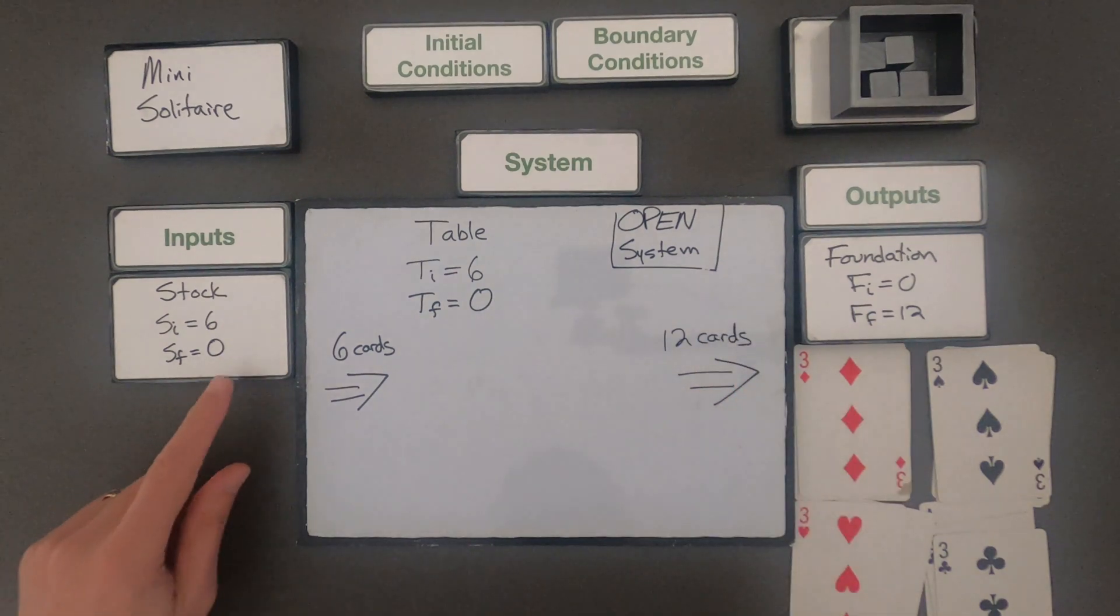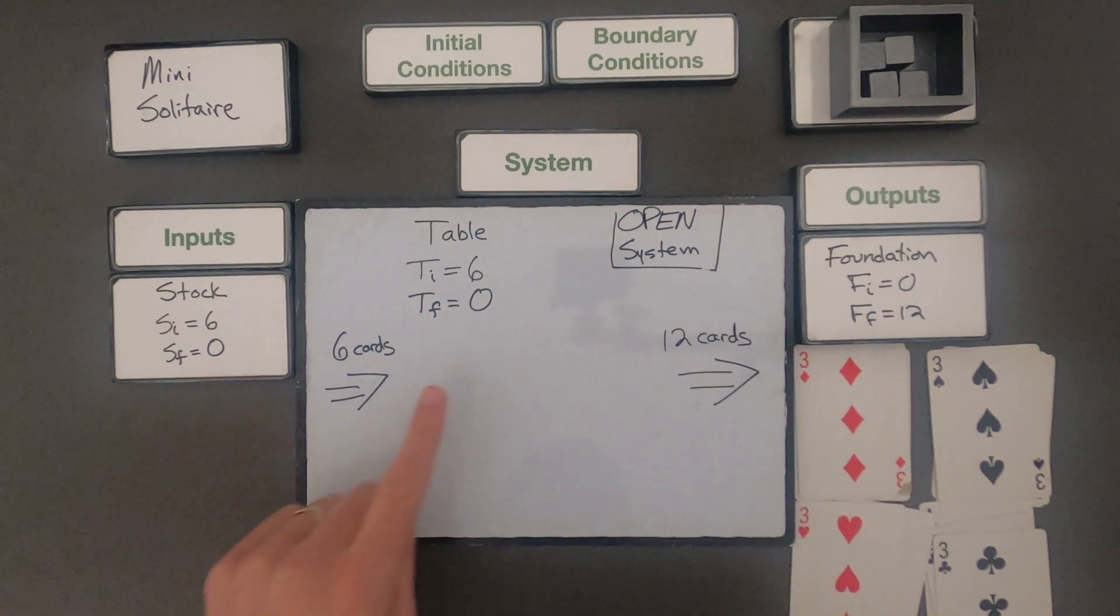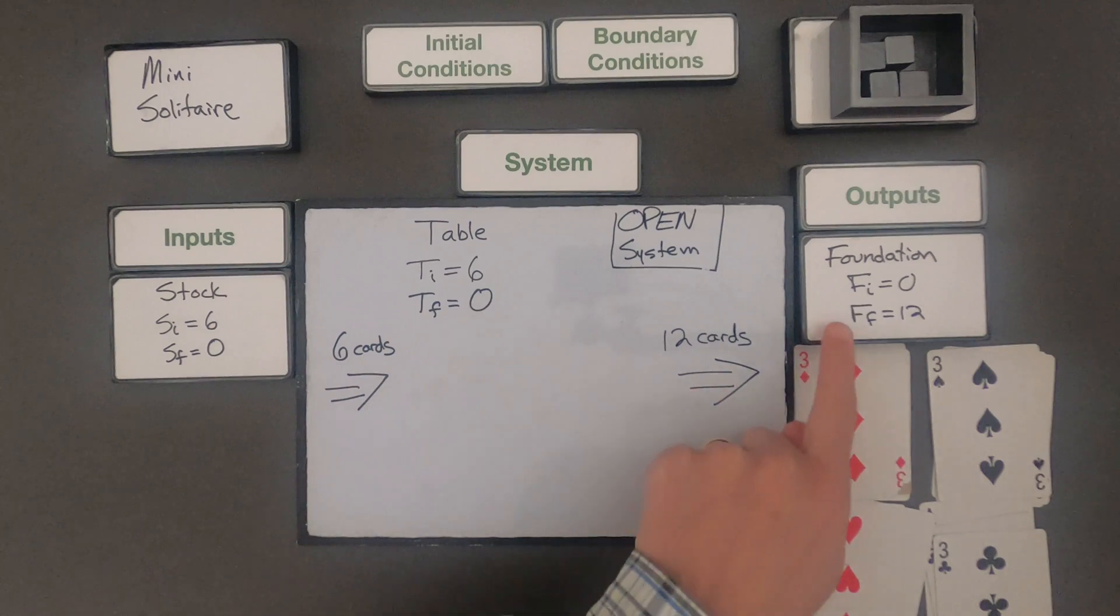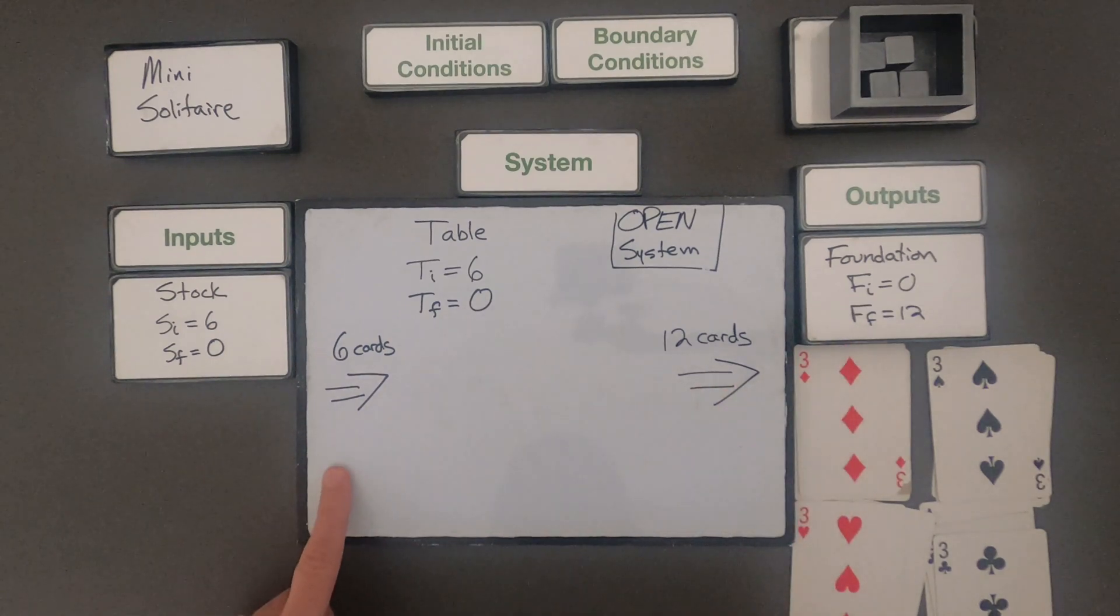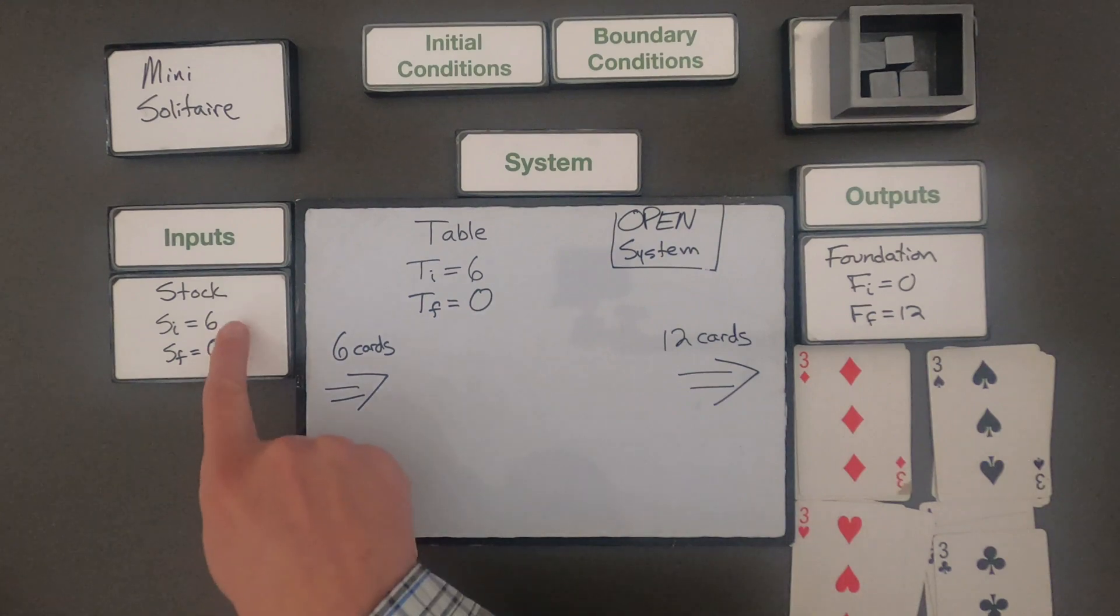So I had a final of zero in the stock, a final of zero on the table, and a final in the foundation of 12. So my inputs into the system would be six cards and my outputs out of the system would be 12 cards. Now let me set it up again and let's just change our initial conditions from 6 to 1 and see what happens.